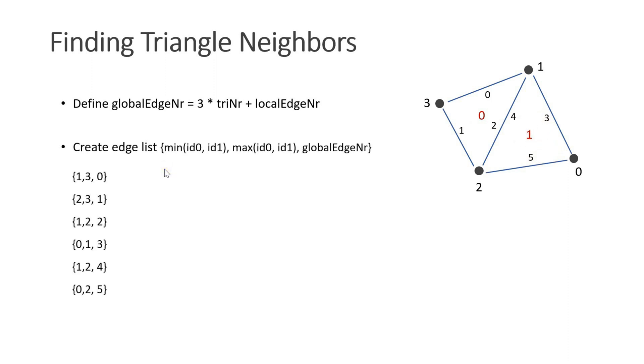First we create a list for each edge. The first entry is the minimum of the indices, the second one the maximum of the indices and the third one the global edge number. It's important that the indices are sorted. Now we sort the entire list. As you can see adjacent edges appear next to each other.